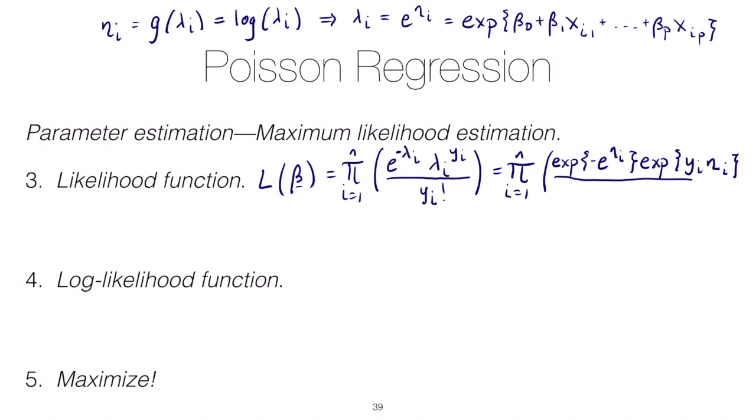And then in the denominator we should just be left with y i factorial. And we could further simplify this as the product from i equals 1 up to n of e to the y i times eta i minus e to the eta i divided by y i factorial.